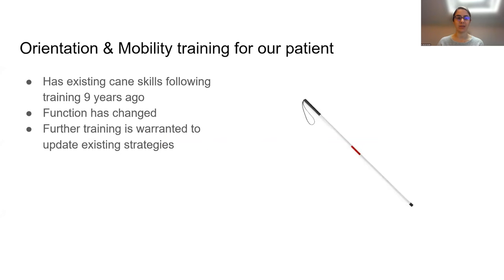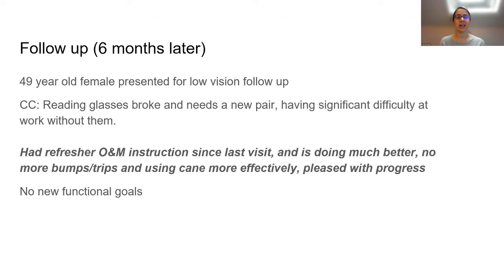For our particular patient, she had existing orientation and mobility cane skills from training nine years ago, but her function had changed despite stable vision and ocular health. Based on this change, she was worth referring for updated orientation and mobility strategies. At a recent follow-up, she was so pleased to report that her refresher orientation and mobility instruction happened and she was doing much better — relieved that she wasn't tripping or bumping into things anymore, saying she knew how to use the cane before, but now uses it much better.